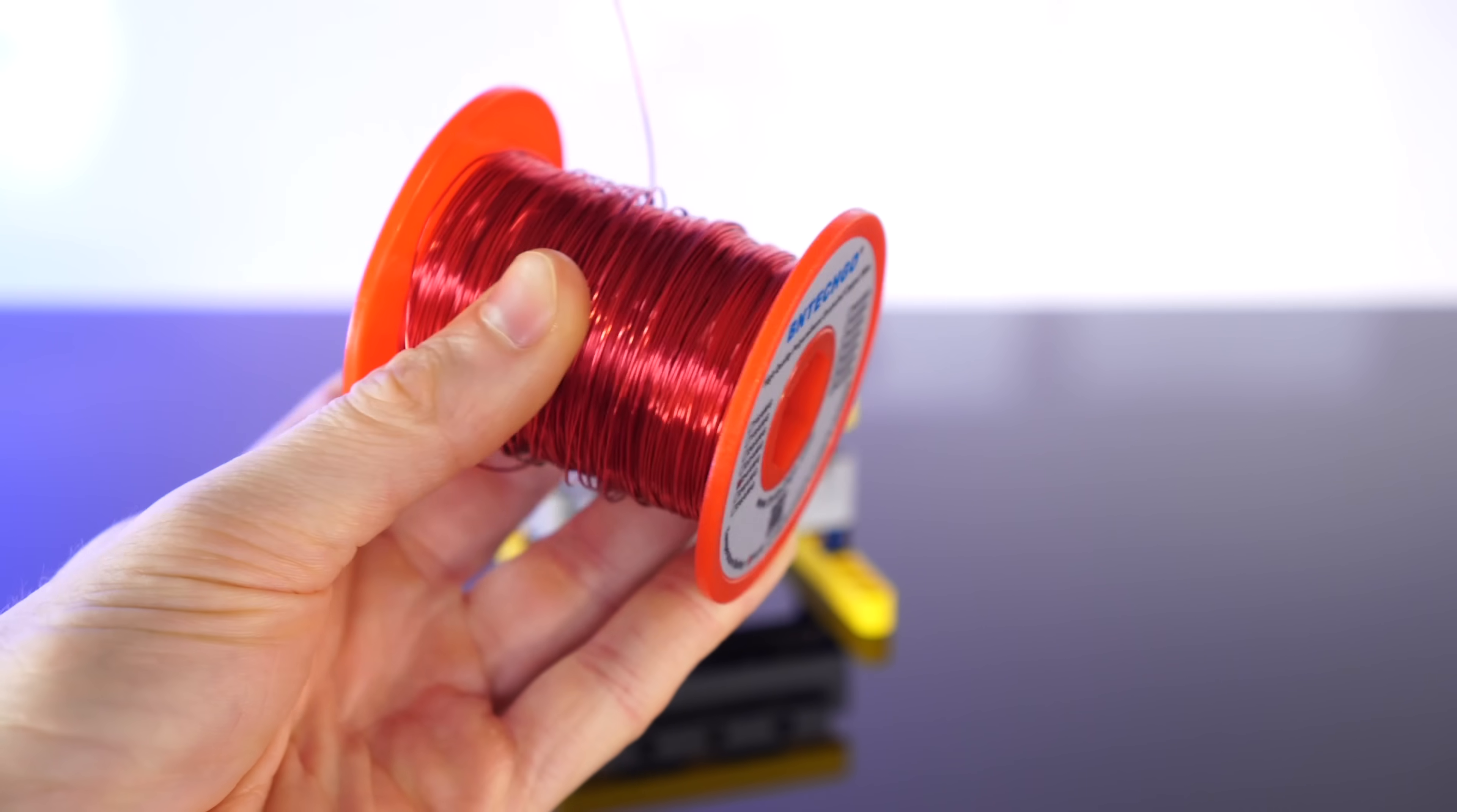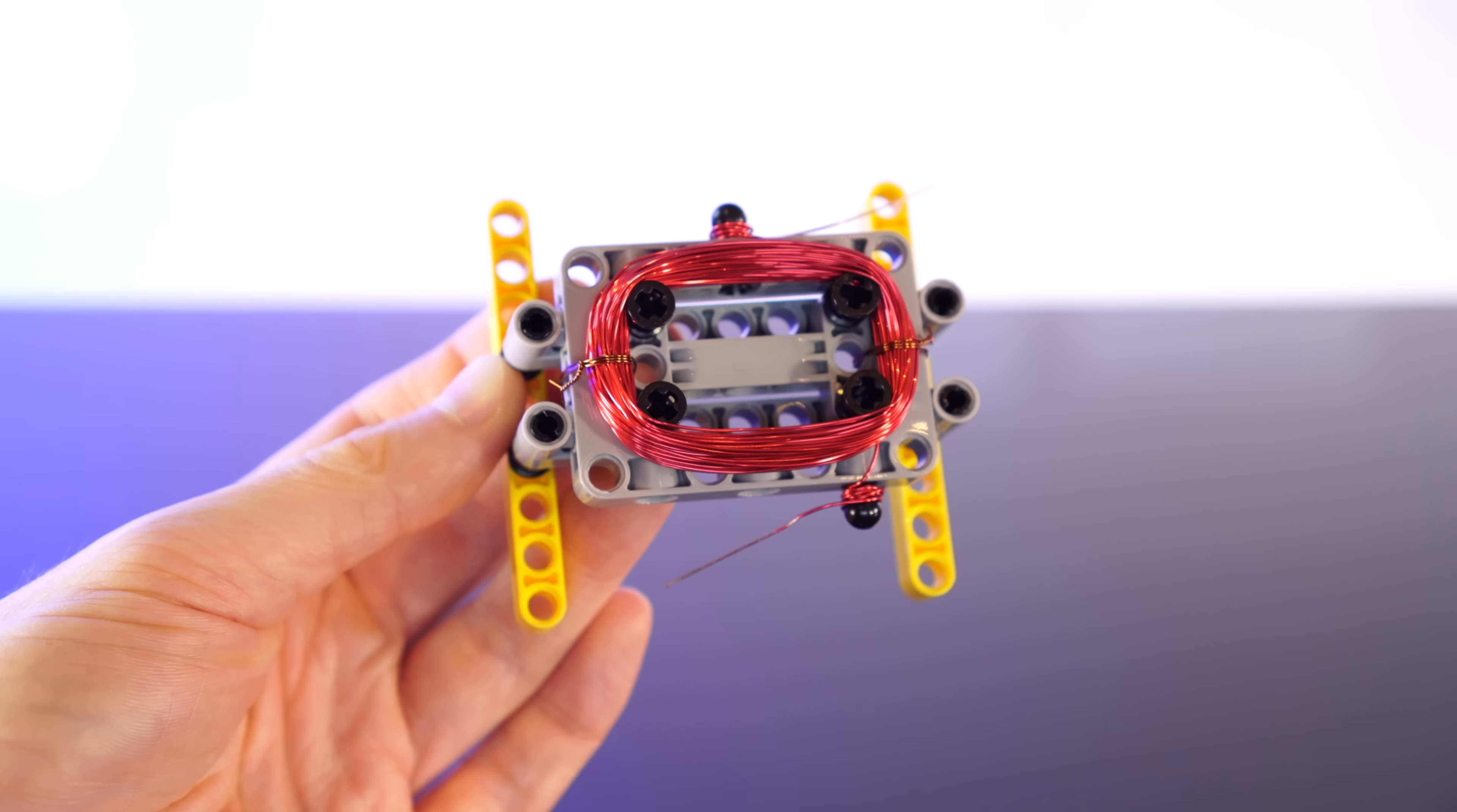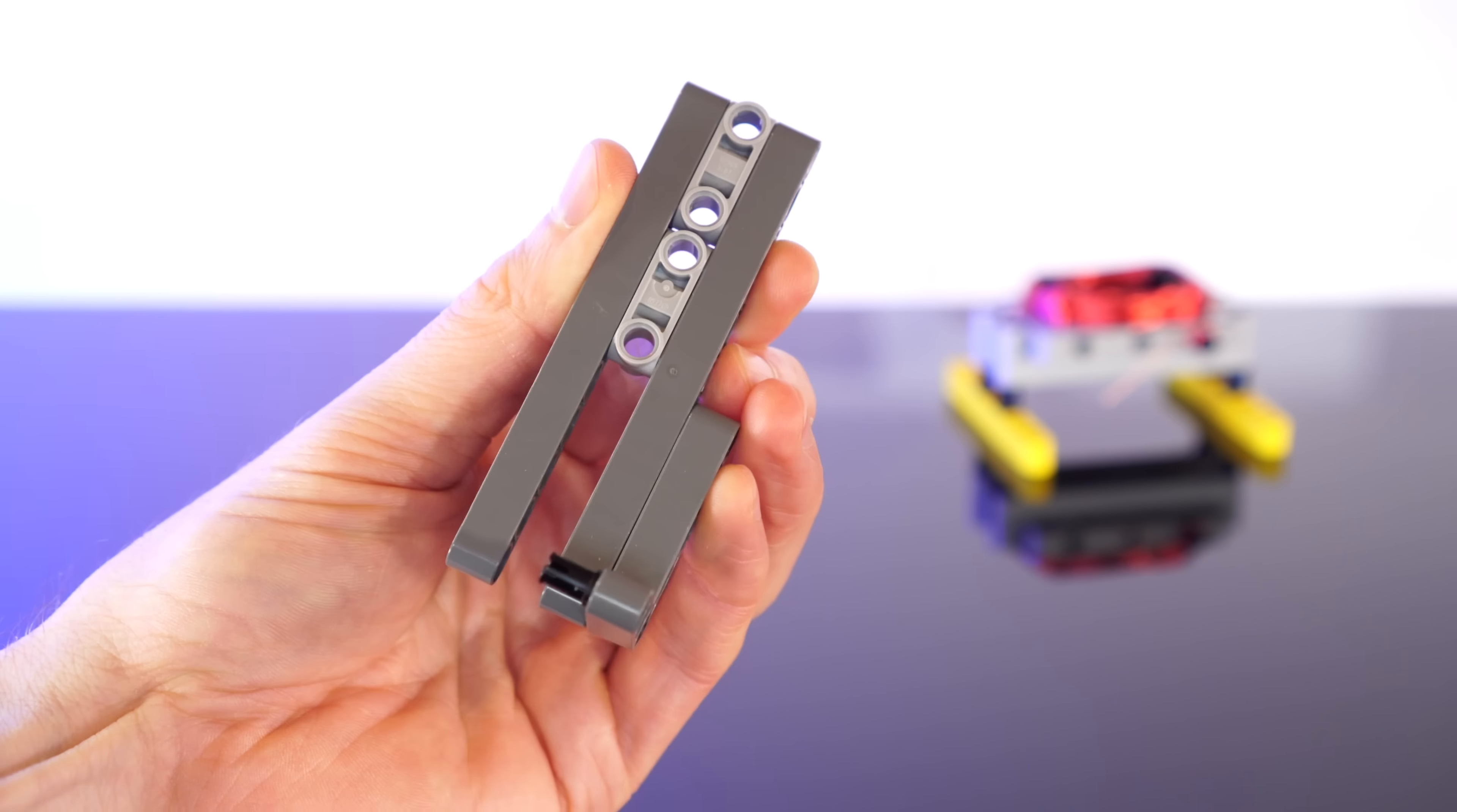I'm using 24 gauge wire here, and we'll wind 80 loops of this. This coil now will act as an electromagnet, which will provide our pushing force. And then this massive neodymium magnet will act as the head of the piston, which will get pushed by the electromagnet coil.